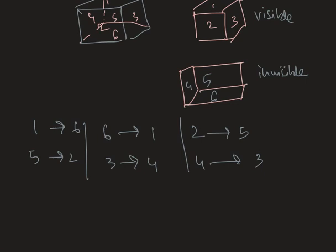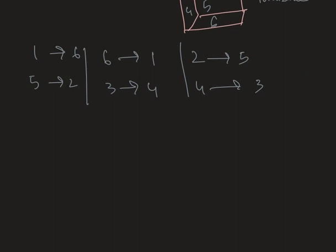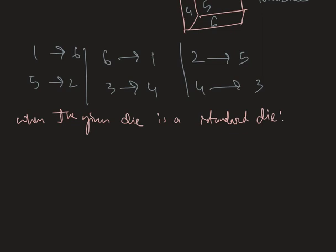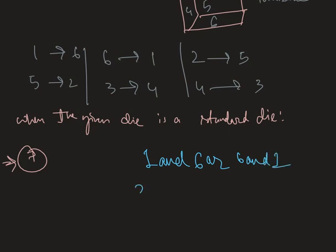Now, if only one single position of a dice is given and we are required to find out whether the given dice is a standard dice or a general dice, there are two possible cases. When the given die is a standard die, the sum of the digits or points of opposite faces is equal to 7. Therefore, in a standard dice, the opposite faces are 1 and 6, 2 and 5, and 3 and 4.